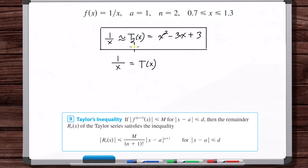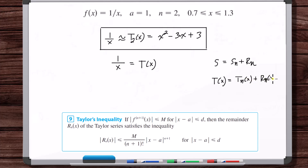We had the infinite sum S equals S sub n plus R sub n. Here with Taylor polynomials, we're thinking about T of x equals T sub n of x plus R sub n of x. Once we pick a value of n, how large is the remainder? It's the infinite sum portion we didn't include, which is the error from the actual function. That's what Taylor's inequality is all about — it gives us a ceiling for the magnitude of R sub n.